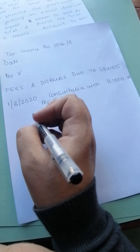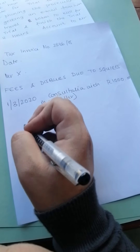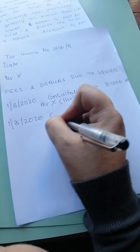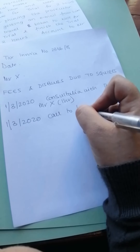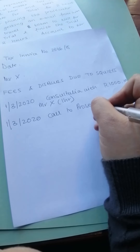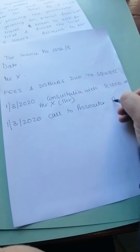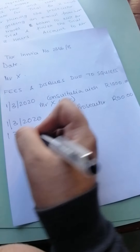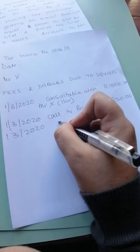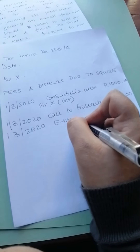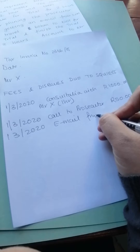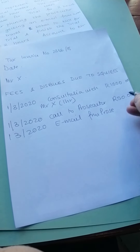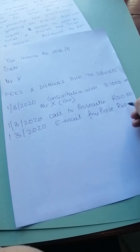Then you prepare for trial for two hours after phoning the prosecutor. So: call to prosecutor — how much for a call? Fifty rand. I get an email from the prosecutor. Email from prosecutor — how much for an email? Well, it's a letter, so 60 rand.